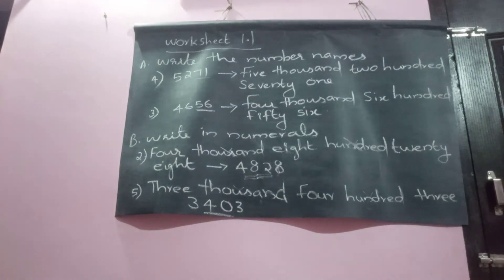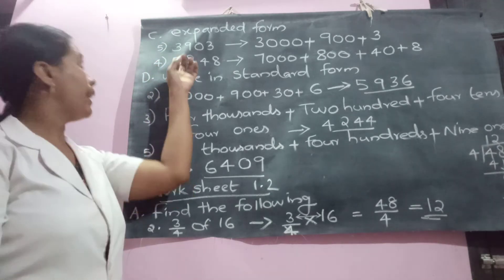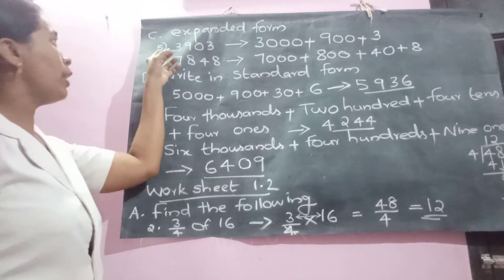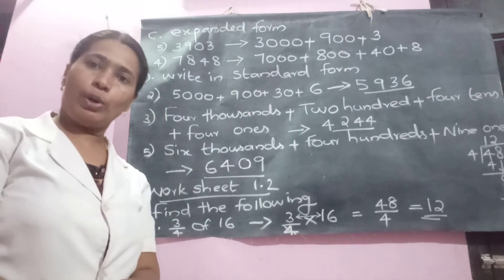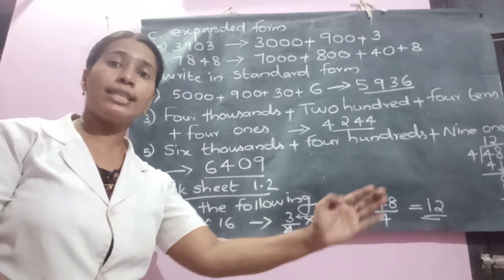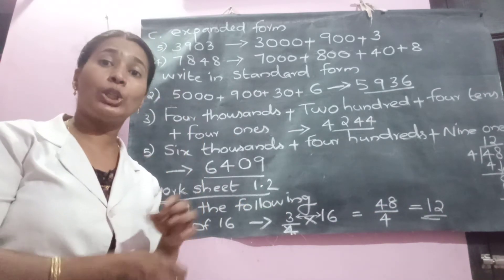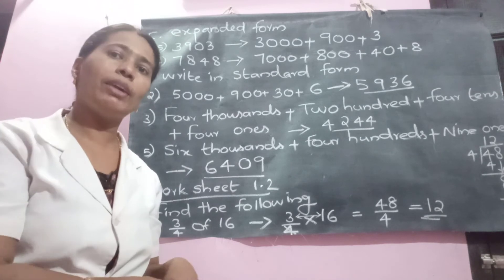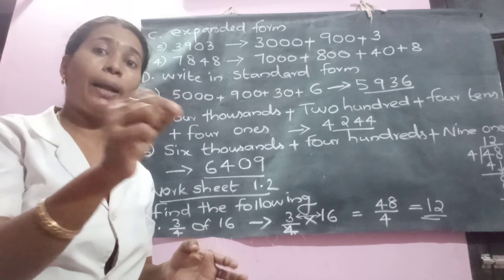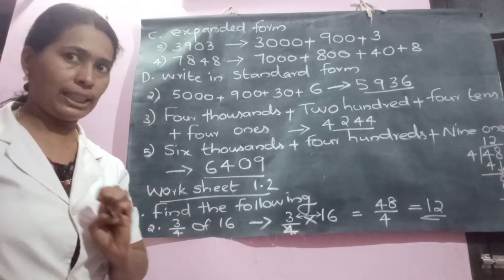Let us move to section C: expanded form. Expanded form means the sum of all place values of the digits in the given number. First find the place value of each digit in the given number, then write them one by one connected with plus signs. This is very easy because we have only 4-digit numbers.